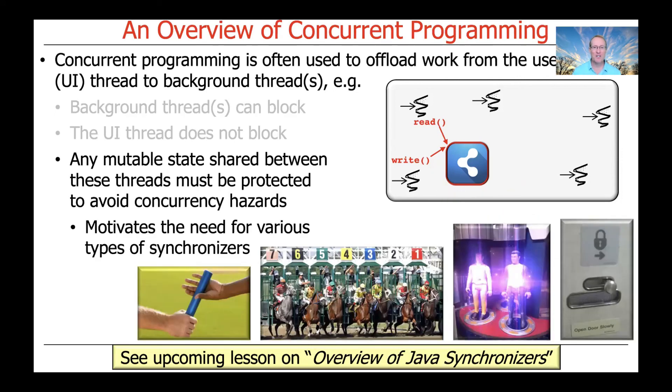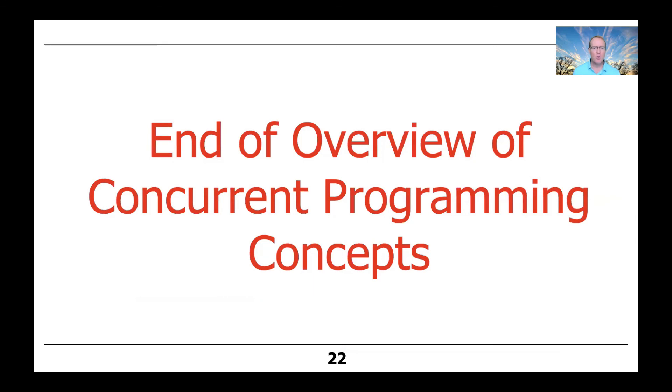As we'll see as we get further into this course, this need to protect the state is what motivates various Java synchronizers. We have things like mutual exclusion mechanisms, atomicity objects, coordination mechanisms, barrier synchronizers, and all these little pictures will make sense as we get further along. Basically, the need to share state between multiple threads correctly and robustly and efficiently is what motivates a big chunk of what we'll be covering in this course. So that's the end of the first discussion, which gives you just a quick overview of concurrent programming concepts, which we will refine in much more detail as we get further on in this course.